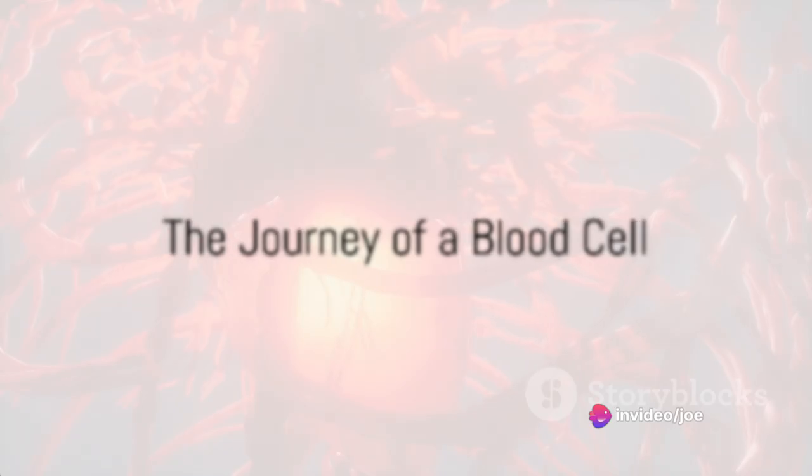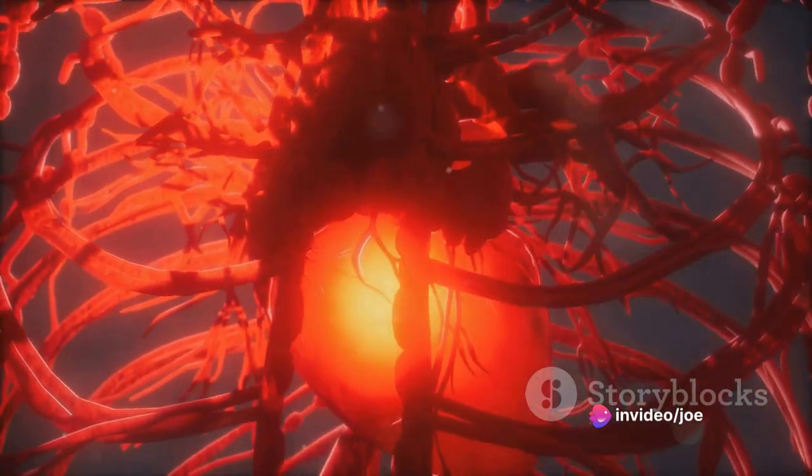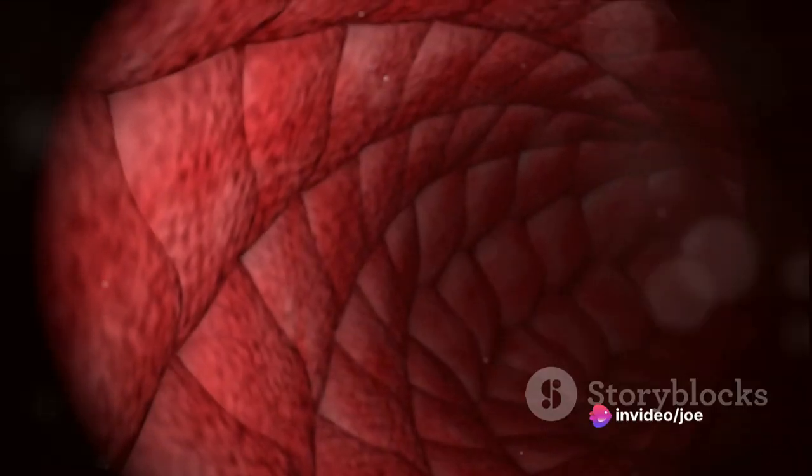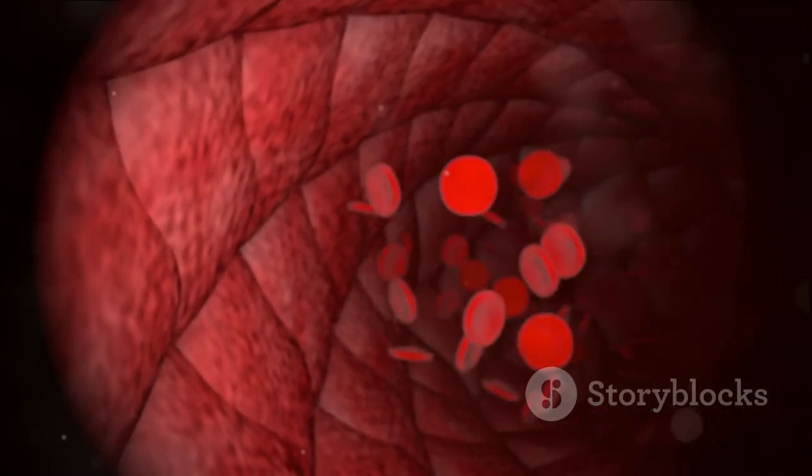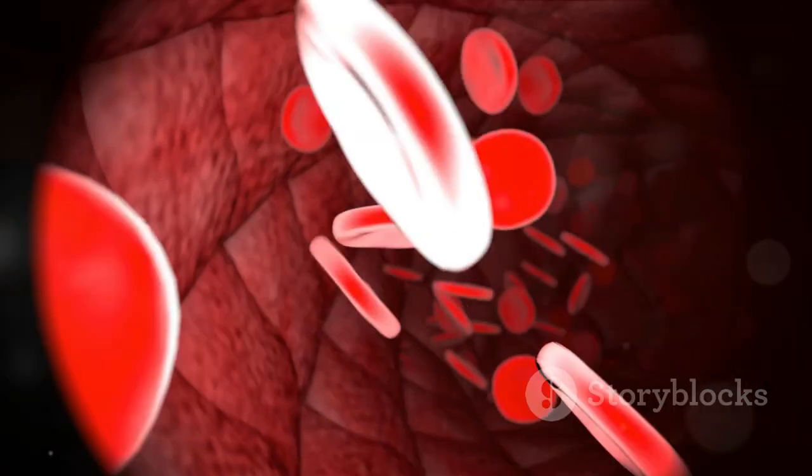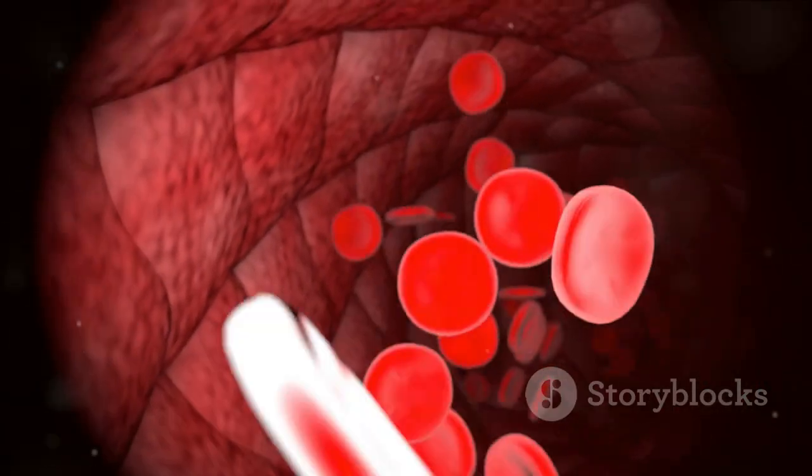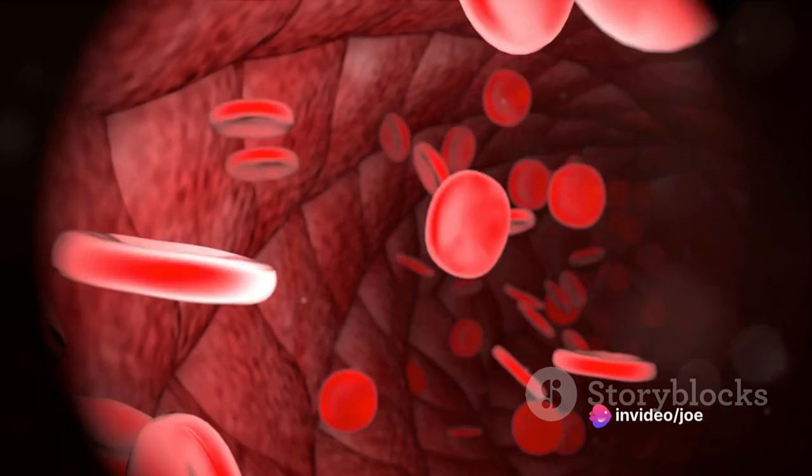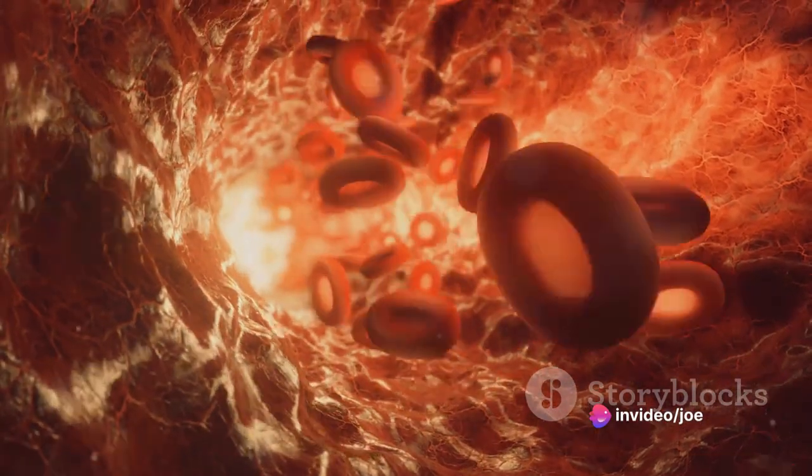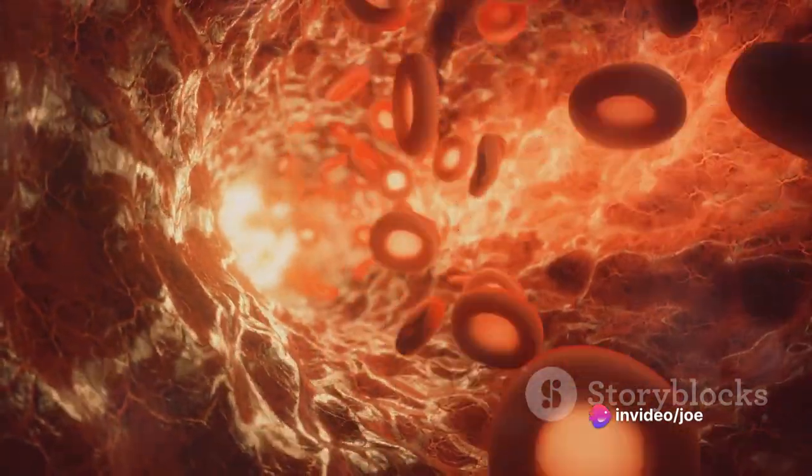A single blood cell takes about a minute to make a complete circuit of the body. Imagine being a red blood cell, embarking on a journey through the vast network of veins, arteries and capillaries that make up your circulatory system. Your starting point? The heart, the grand conductor of this biological symphony. As a red blood cell, your main mission is to transport oxygen.